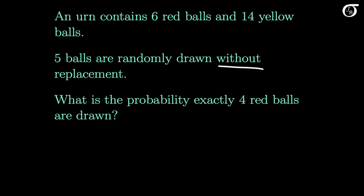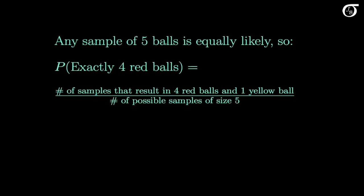Before we take a formal look at the hypergeometric distribution, let's calculate this probability by thinking through the underlying logic. If we are randomly selecting 5 balls, then any sample of 5 balls is equally likely. So the probability of getting exactly 4 red balls is the number of samples that result in exactly 4 red balls and 1 yellow ball — since we're picking 5 balls and 4 must be red, 1 must be yellow — divided by the total number of possible samples of size 5.